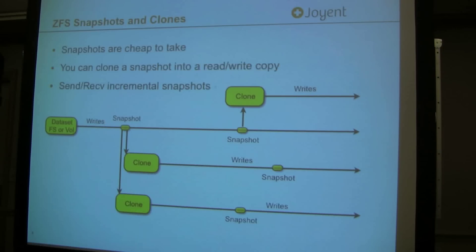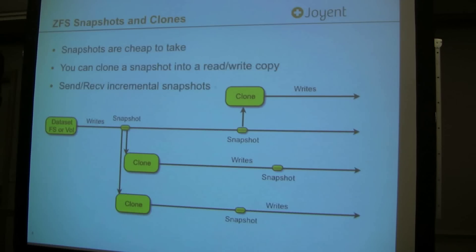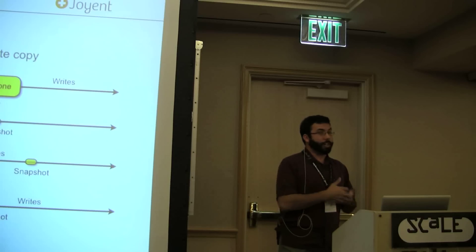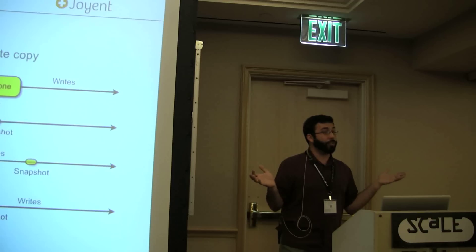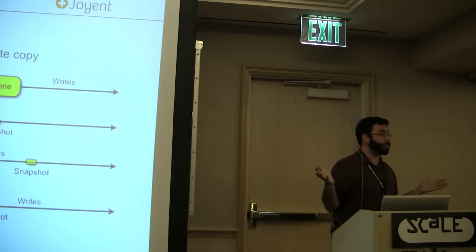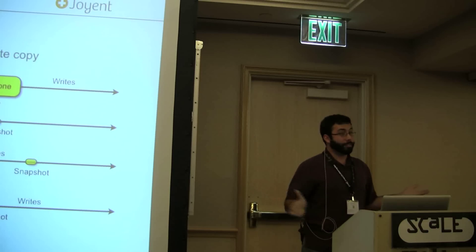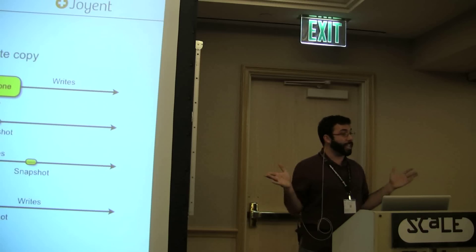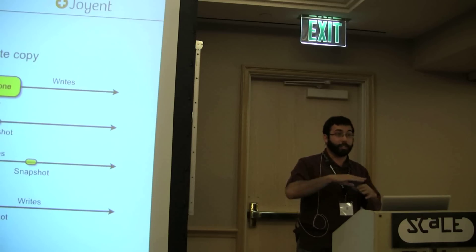ZFS also has something called ZFS send and ZFS receive. This lets you actually take a snapshot, send it over to another host, and basically import that entire set of data. The most common way people do this is something like ZFS send, piped to SSH, and ZFS receive. Or you can of course just send this directly to a file. The benefit here is that you can actually send incrementals between snapshots. So traditionally if you're using rsync or another tool, you'd say a gigabyte file has modified a few bytes so the entire file has changed and you need to send it all. Instead, ZFS actually knows exactly what blocks have changed through the different snapshots, so it can send just the delta — exactly which data blocks have changed, and that's all that gets sent across.